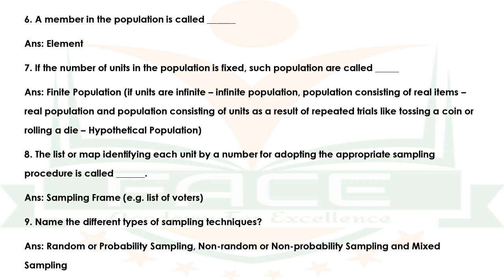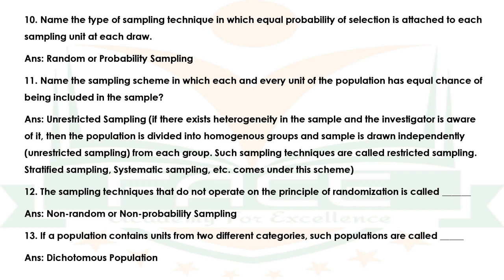Question 8 — The list or map identifying each unit by a number for adopting the appropriate sampling procedure is called dash. Answer: Sampling frame. Example: list of voters. Question 9 — Name the different types of sampling techniques. Answer: Random or probability sampling, non-random or non-probability sampling, and mixed sampling. Question 10 — Name the type of sampling technique in which equal probability of selection is attached to each sampling unit at each draw. Answer: Random or probability sampling.